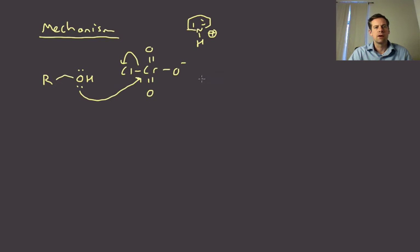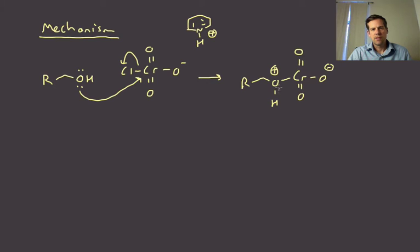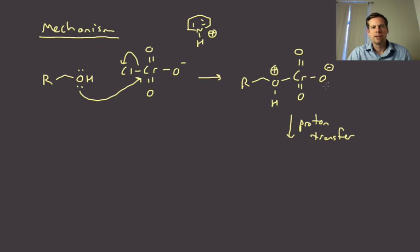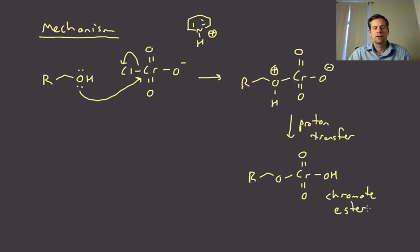When the alcohol attacks and displaces chloride, we end up with the chromium attached to the oxygen of our alcohol, generating a positive charge. That species then undergoes a proton transfer — the oxygen on the alcohol gets deprotonated and the other oxygen gets protonated — to give what's called a chromate ester: the ester of an alcohol with chromic acid.